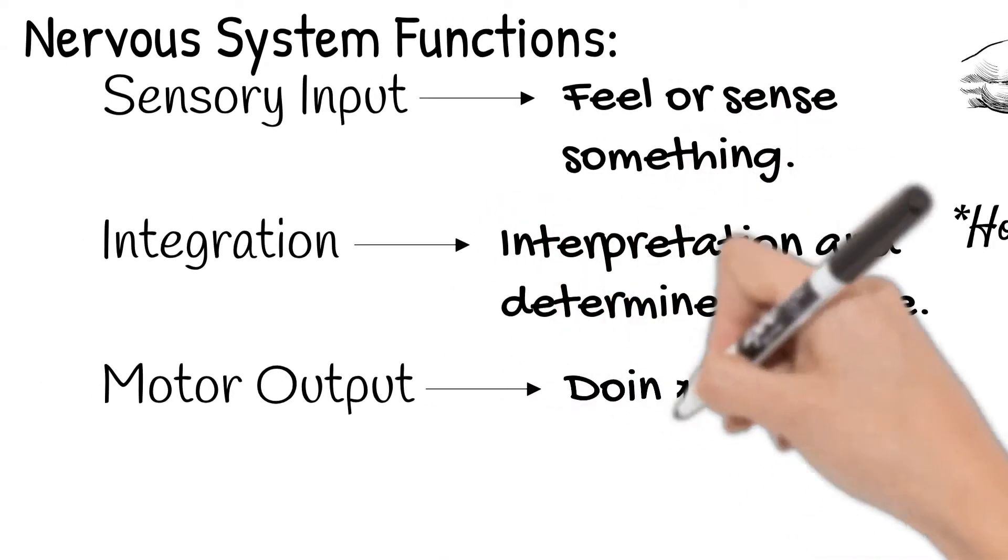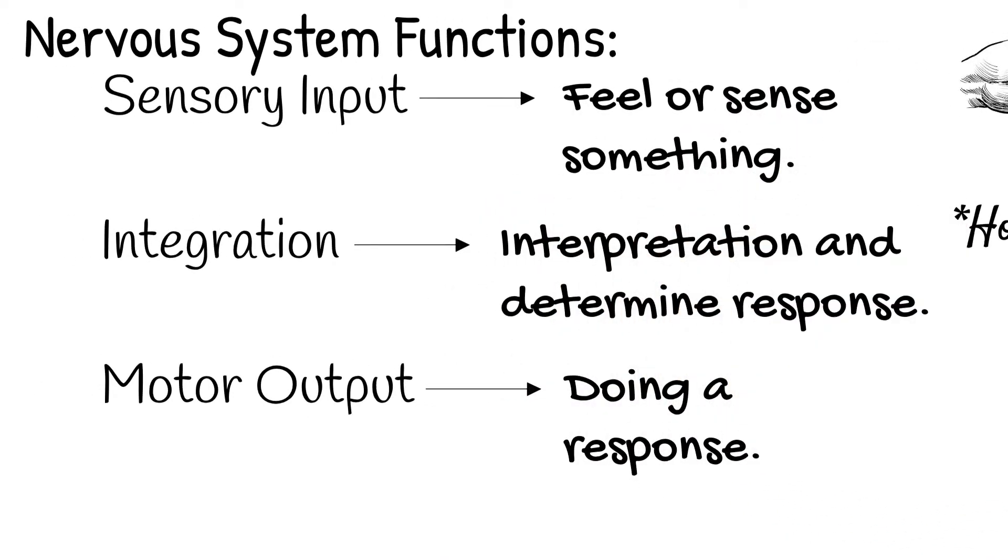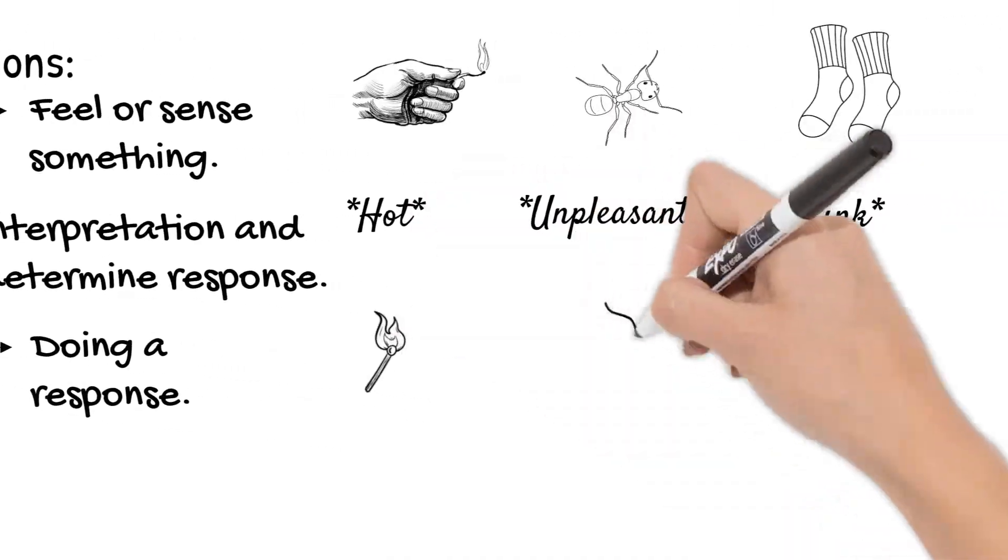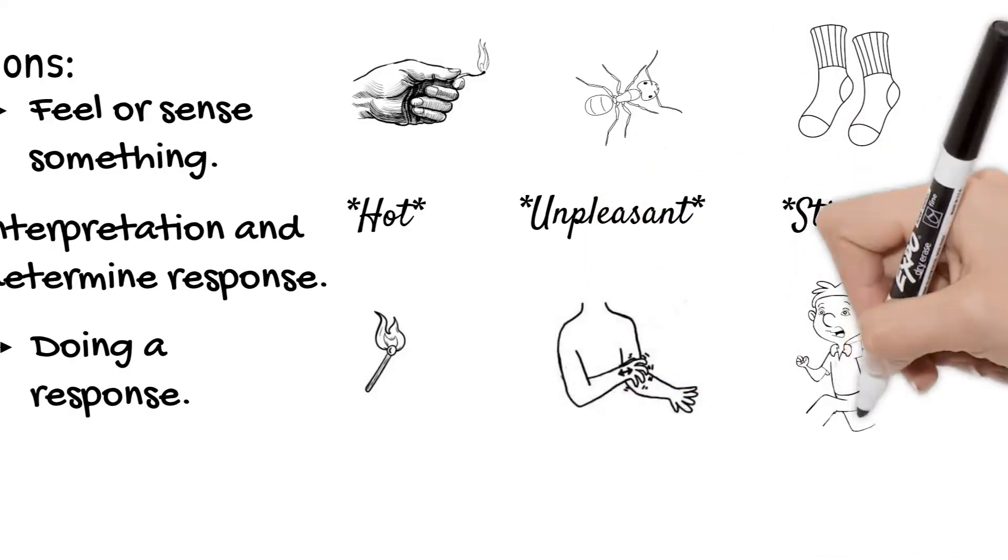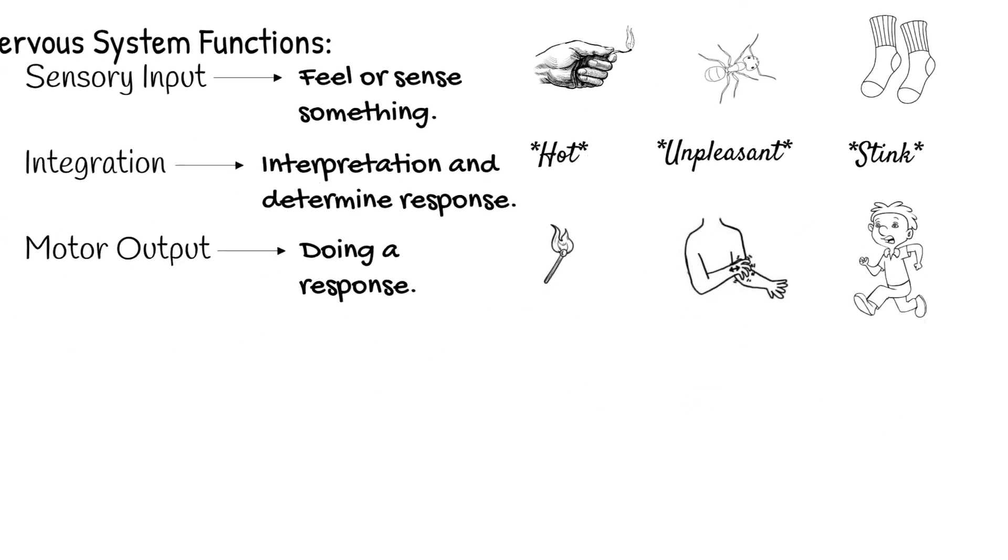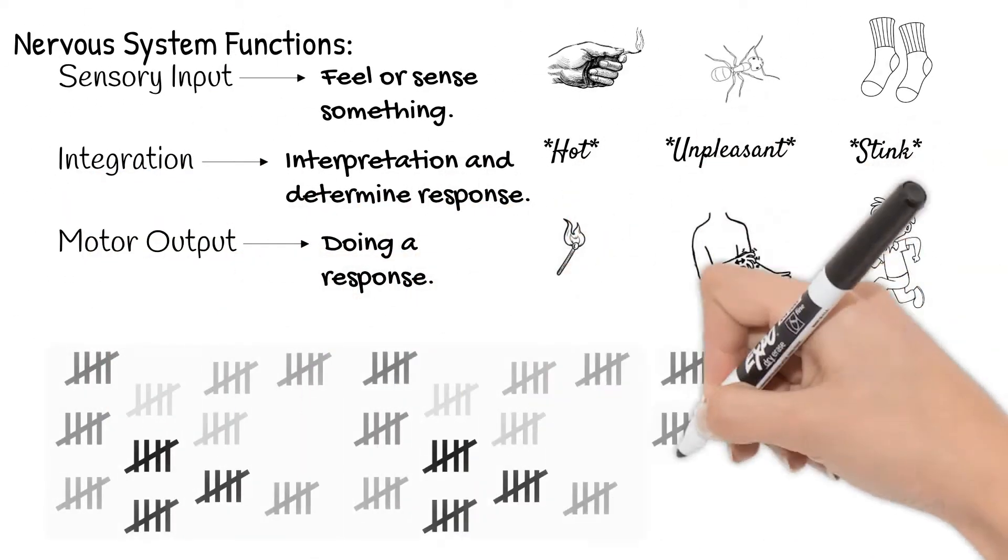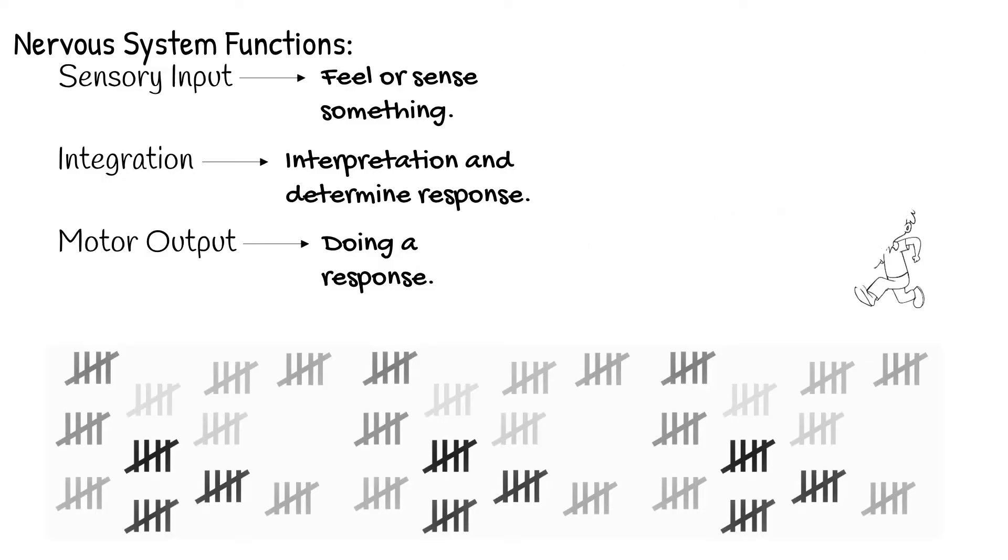Motor output is actually doing a response. So dropping the match, brushing the ant away, quickly leaving your brother's room. Your nervous system does this throughout the day more times than you could probably count.